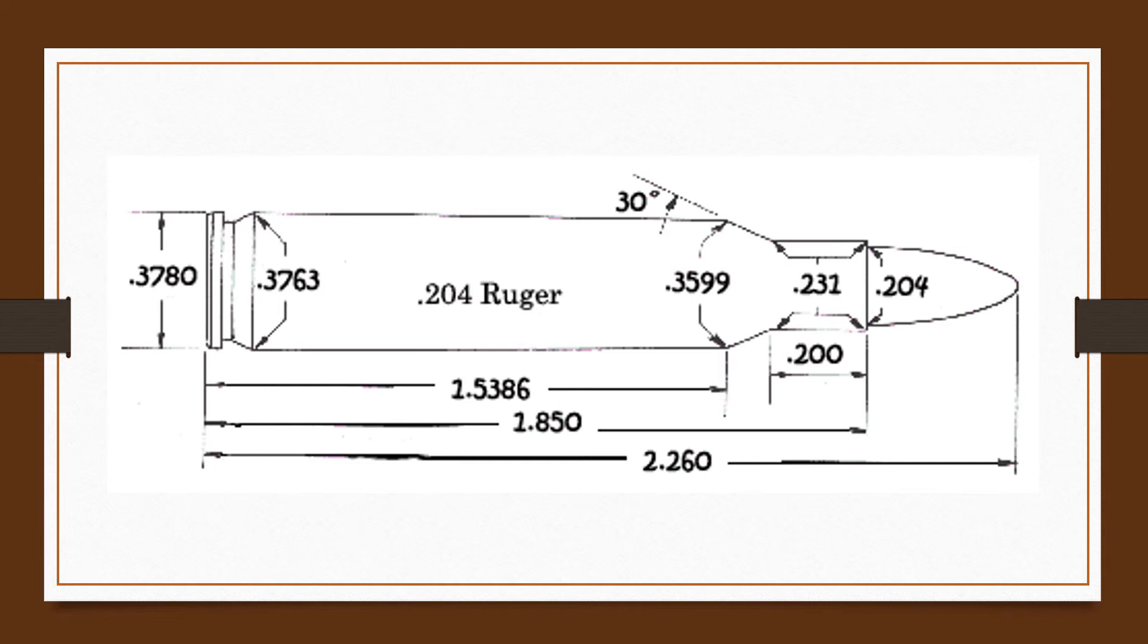So important facts: the 204 uses the 47 millimeter long 222 Remington Magnum as its parent cartridge, necking it down to accept the 204 bullets and changing the shoulder angle to 30 degrees.